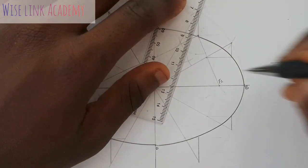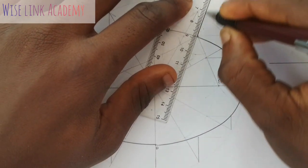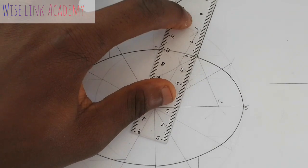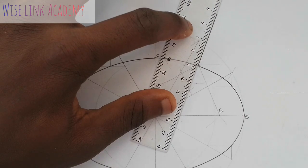Where the arc meets at this point, to the center point here, draw a thick line, this way. So, that thick line is our normal.